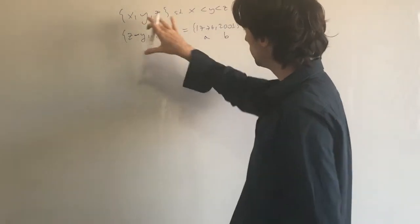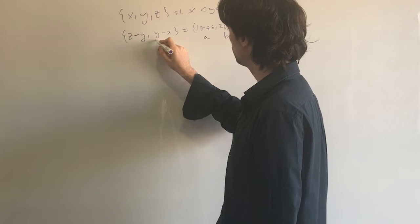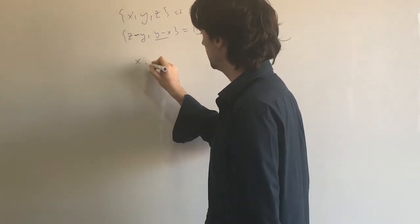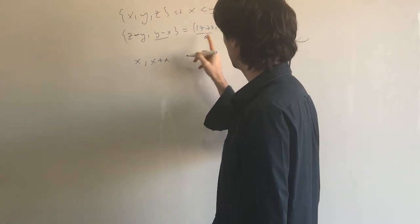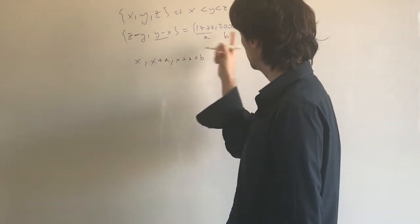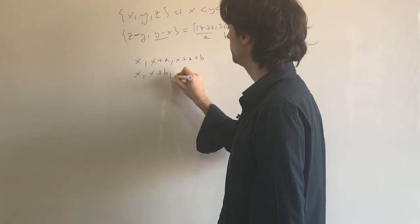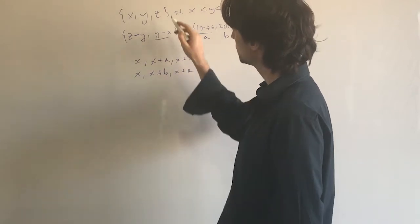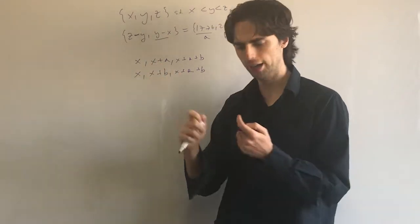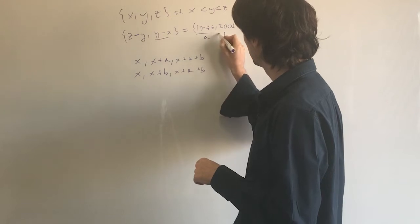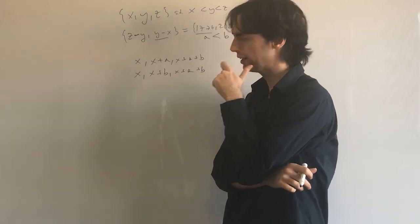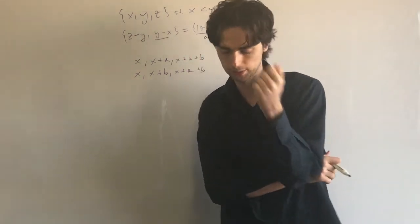What does {X, Y, Z} look like? If Y − X = A and Z − Y = B, then the set is either {X, X+A, X+A+B} or, the other way around, {X, X+B, X+A+B}. Given an X, we immediately know Z; the only question is what Y is. Note that B > A.